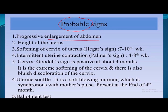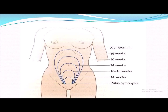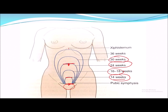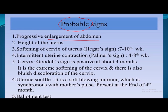The probable signs include progressive enlargement of the abdomen. The uterus, which is a pelvic organ below the pubic symphysis, rises: at 14 weeks it is outside the pelvic brim; between 16 to 18 weeks it is between the umbilicus and pubic symphysis; at 24 weeks it is at the level of the umbilicus; at 30 weeks between the xiphisternum and umbilicus; and at 36 weeks at the level of the xiphisternum.